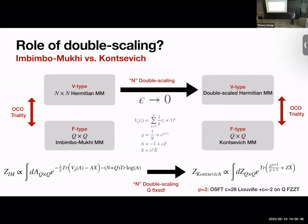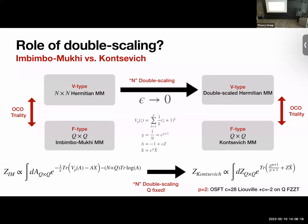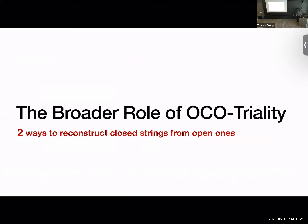For the p=2 case, this matrix model was shown to be exactly some open string field theory of Liouville plus c=-2, on Q FZZT branes — beautiful work by Gaiotto and Rastelli. One thing we'd hope is to understand in what sense this is also some open string field theory generally. The way that closed strings emerge from these theories — the V-type and F-type — are a little different, but they get related by open-closed-open triality.